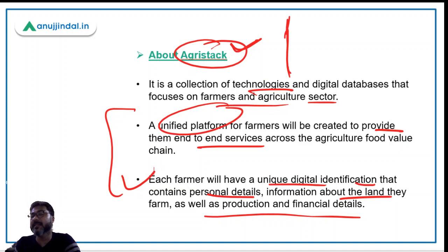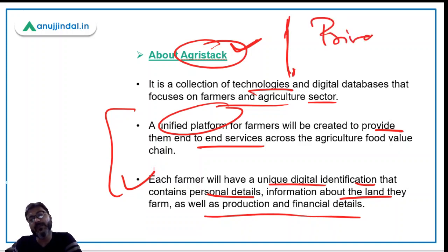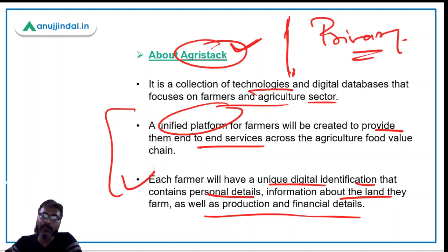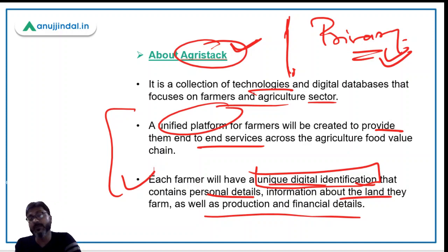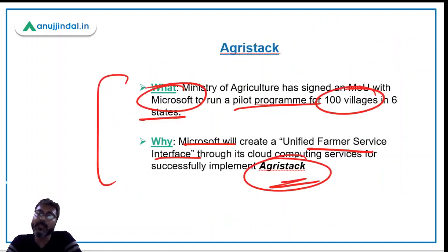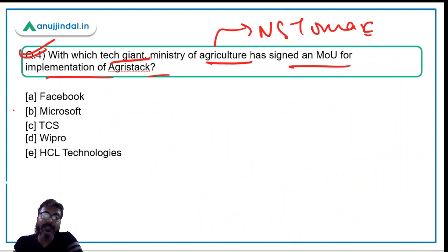One significant concern with AgriStack is the potential for a privacy breach. The unique digital identification will be generated with the help of Aadhaar card, so there is a chance that the farmer's privacy may be breached. This is a major concern with the program, but let's see how it evolves. The correct answer is option B — Microsoft — the Ministry of Agriculture has signed the MOU with Microsoft.